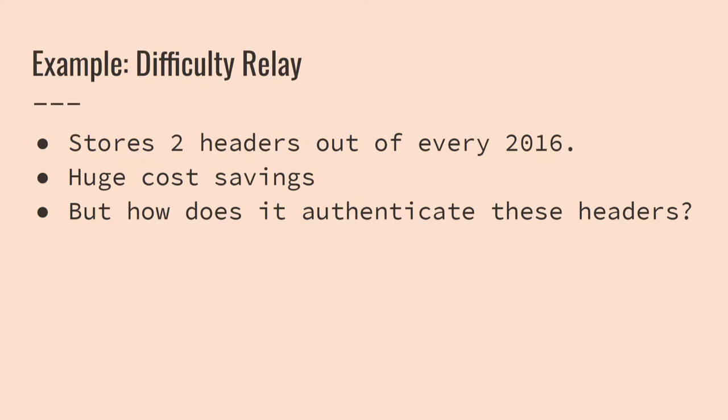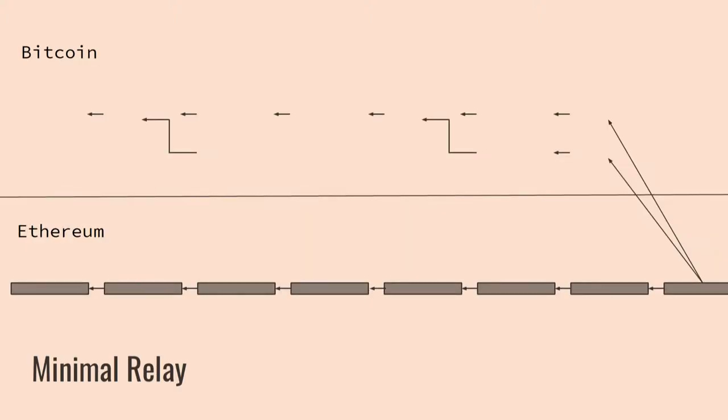Not forwarding thousands of headers also cuts down on the security model a little bit. So with the difficulty relay that we came up with, you forward two headers out of every 2016, and you may not get an accurate picture of Bitcoin consensus at every point, but you do get an accurate picture of what the current Bitcoin difficulty is. We authenticate that using proof of work and validating the Bitcoin difficulty adjustment algorithm, which is actually really painful to do in Solidity.